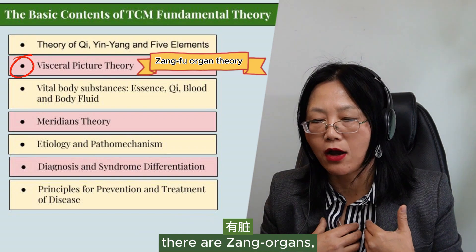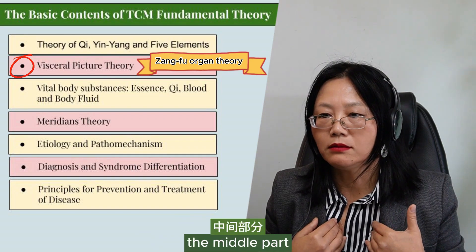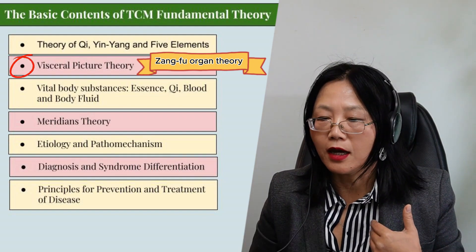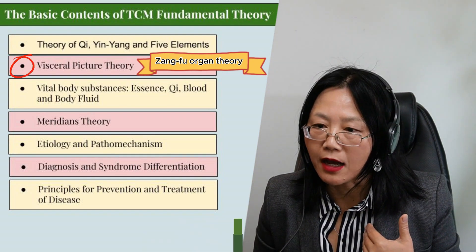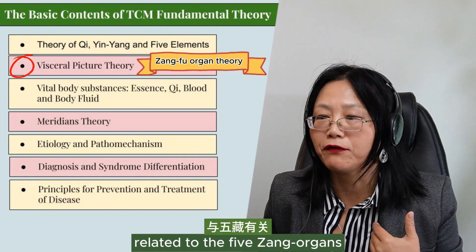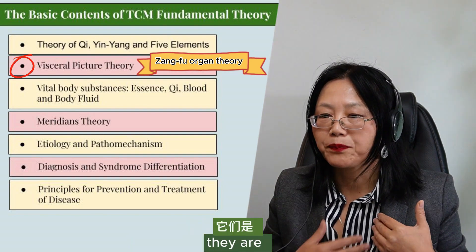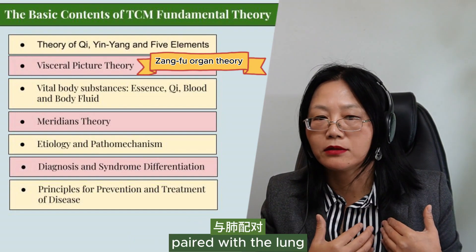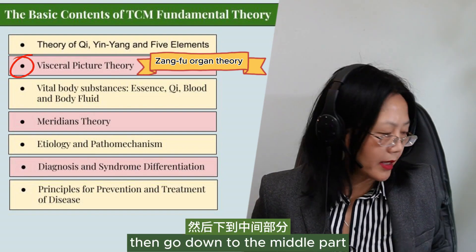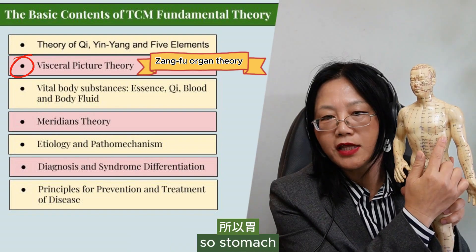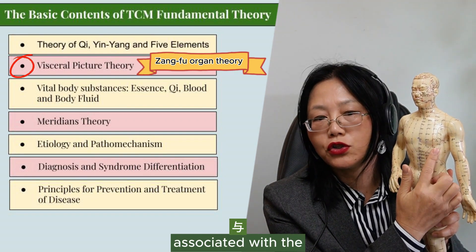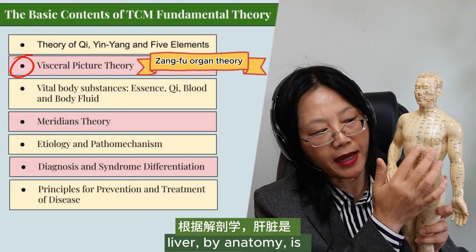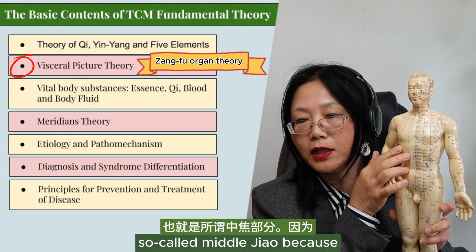Inside our body, there is a zhang organ. Heart, lung, and in the middle part we have spleen, and in the lower part we have the kidney and the liver. That's the five zhang. We have six fu organs related to the five zhang organs. They are the small intestine related with heart, large intestine paired with the lung. Then in the middle part, the stomach is the fu organ associated with the spleen. The liver, by anatomy, is almost on the middle part, the so-called middle jiao.